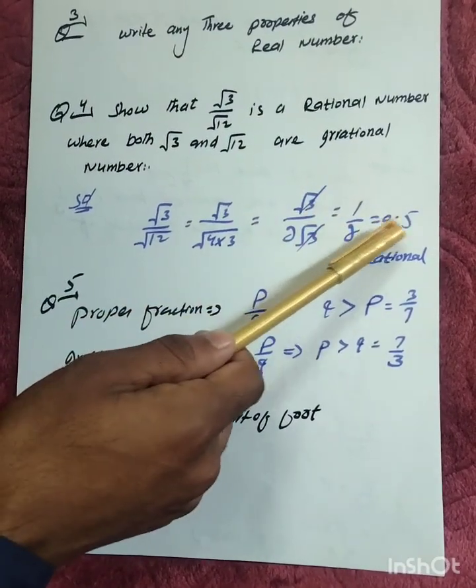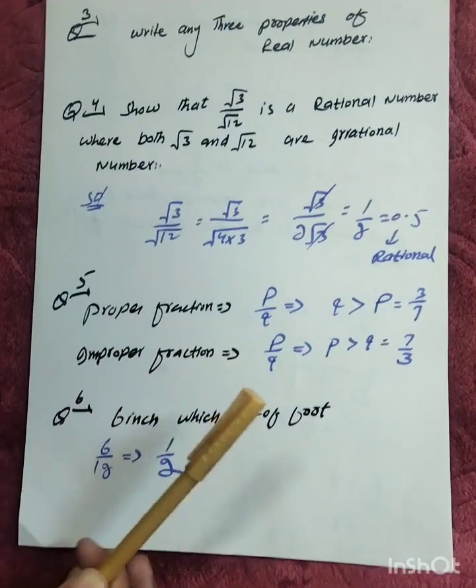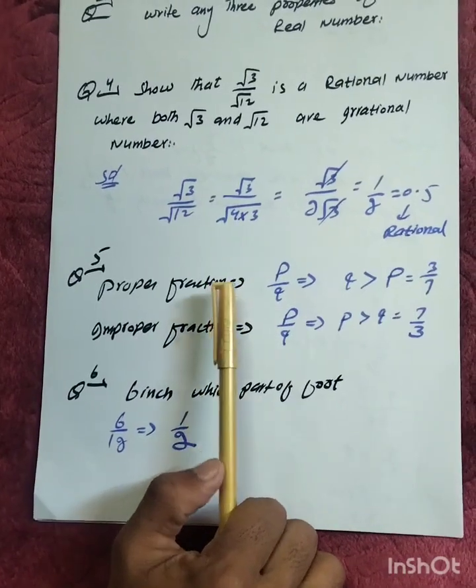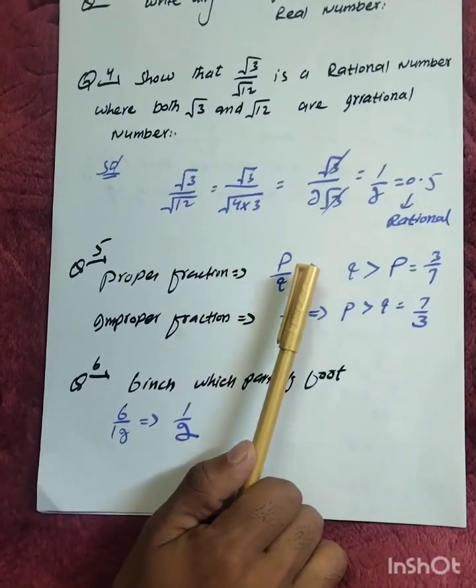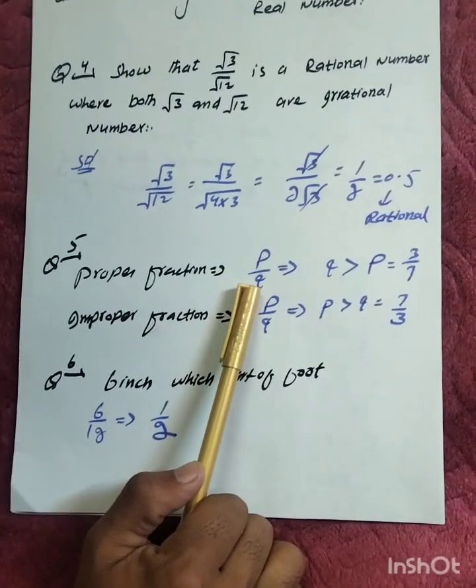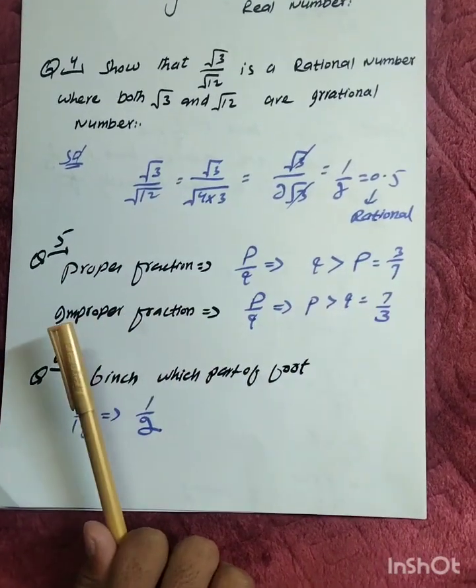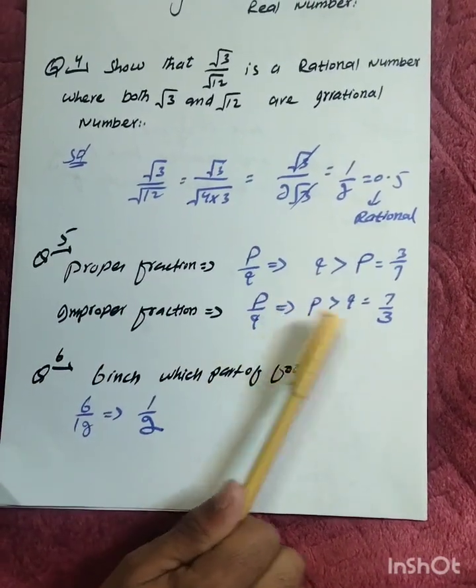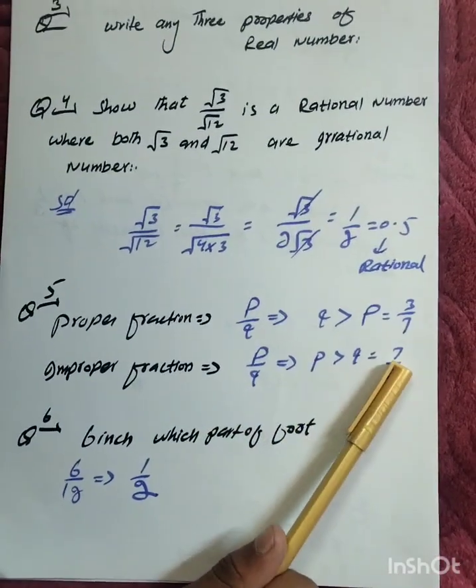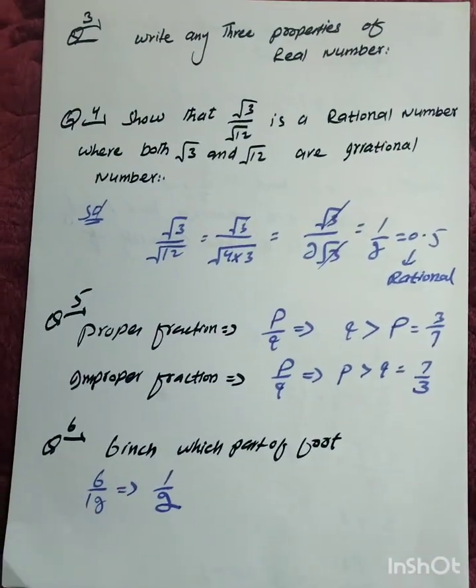Question number 5 explains proper fractions and improper fractions. A proper fraction is when p divided by q has q greater than p, meaning the denominator is greater than the numerator. For example, 3 divided by 7. An improper fraction is when p is greater than q, meaning the numerator is greater than the denominator, like 7 divided by 3.